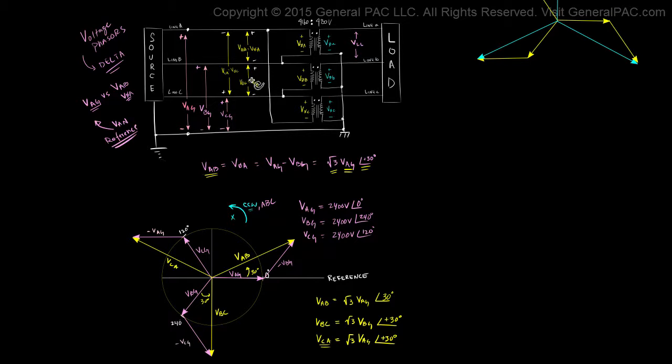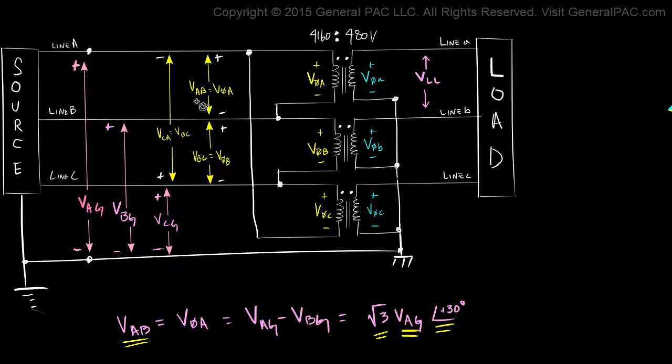Now notice that in part 6A, we said that the line to line voltage across line A and line B is equal to phase A voltage. Now if you're having a hard time recalling this, just click on this link here and it'll go to the video exactly where we talked about it.